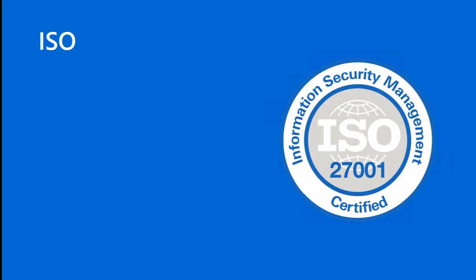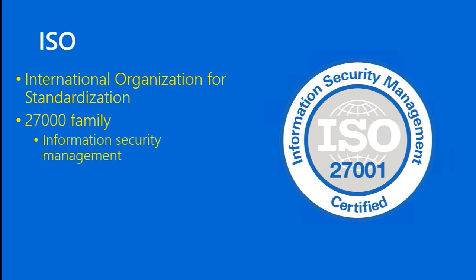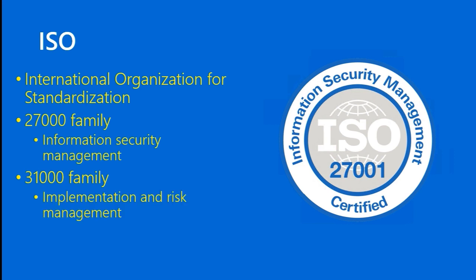Another set of standards comes from ISO, the International Organization for Standardization. There's the 27,000 family, typically a voluntary certification concerned with information security management. Another one is the 31,000 family, which concerns implementation and risk management for a business.